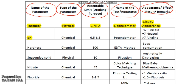Then pH. It is a chemical water quality parameter. The acceptable limit for drinking purpose is 6.5 to 8.5, and it is measured by potentiometer. If pH is less than 7, water is acidic; equal to 7 means neutral; and greater than 7 means alkaline.